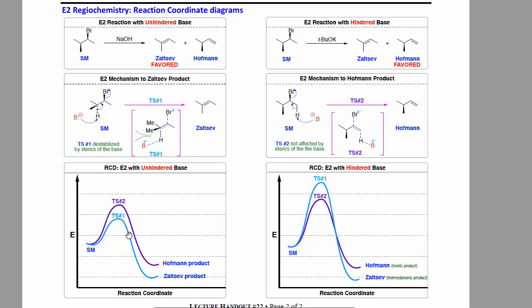Transition state one, with a small base, leads to the better product. However, with a larger base, it's much higher in energy. And even though it leads to the better product, you can't get there. You're kinetically forced to take the lower energy pathway, the Hoffman product.